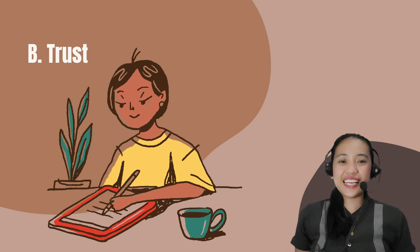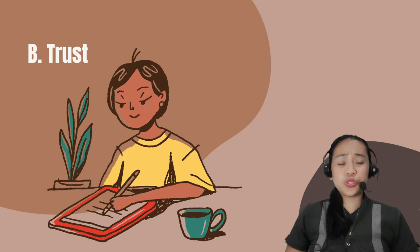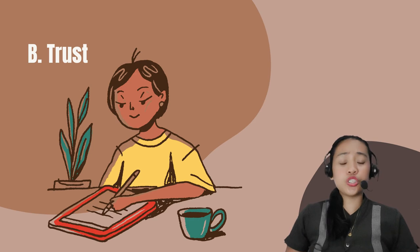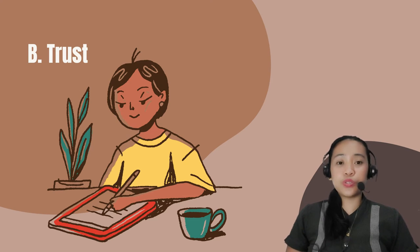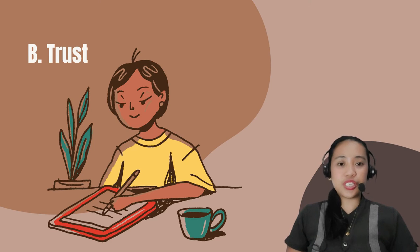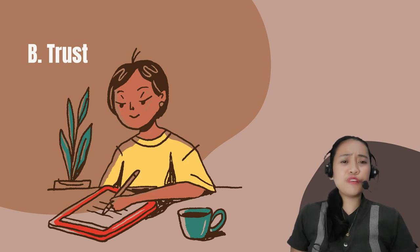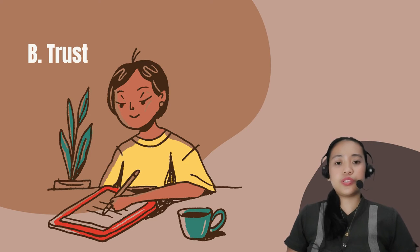The correct answer is Letter B. According to the psychosocial development theory of Erikson, a child who is cold towards people around him failed in the basic goal of trust in the stage Trust vs. Mistrust. A child who exhibits this kind of behavior might have lacked the warmth of his mother's embrace and affection from significant others.